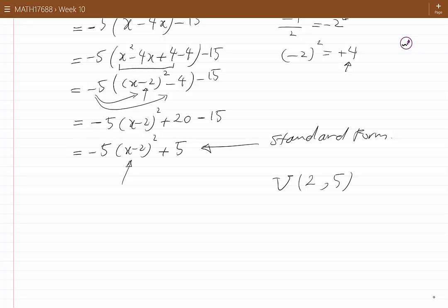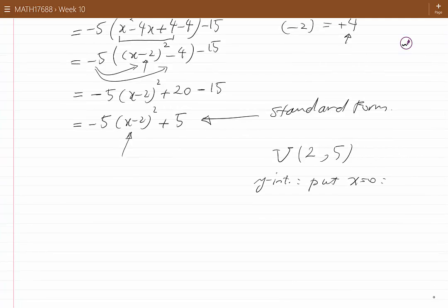Now, to find the y and x-intercept, in order to sketch the curve, we follow the procedure. To find the y-intercept, we put x equal to 0 in y. And y becomes minus 5 times 0 squared plus 20 times 0 minus 15, and this is minus 15.